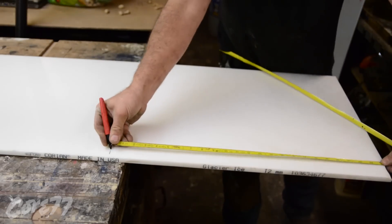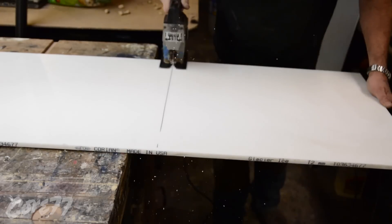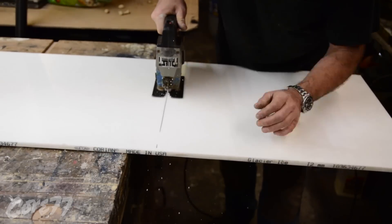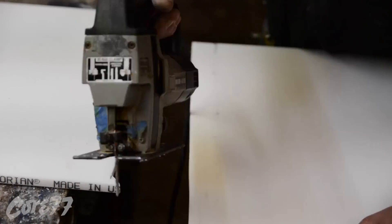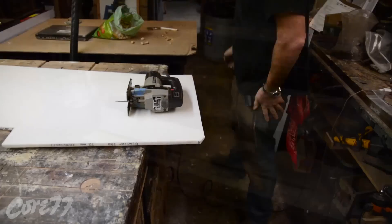And there it is. It's a leftover piece of about a $400 piece of 8 foot by 30 inch Glacier Ice, half inch thick Corian. Just to cut down a small piece there, I'm using my jigsaw.